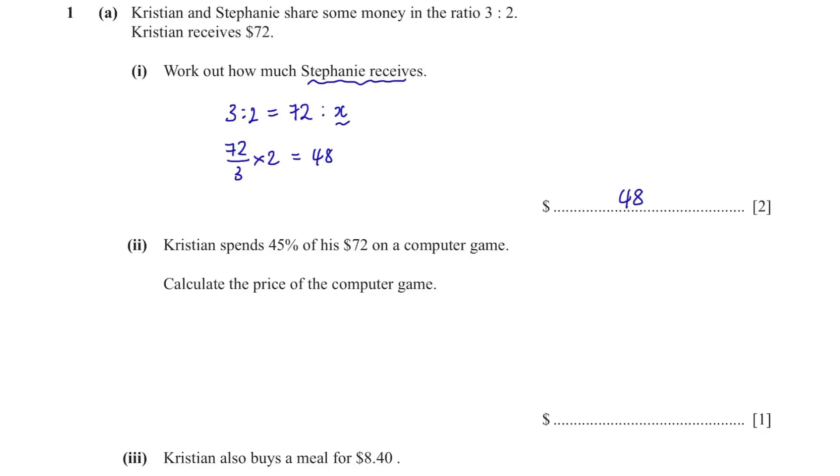Christian spends 45% of his $72 on a computer game. Calculate the price of the computer game. Whenever we see the word of, we multiply them together. So use your calculator to find 45% times $72. It's $32.40.